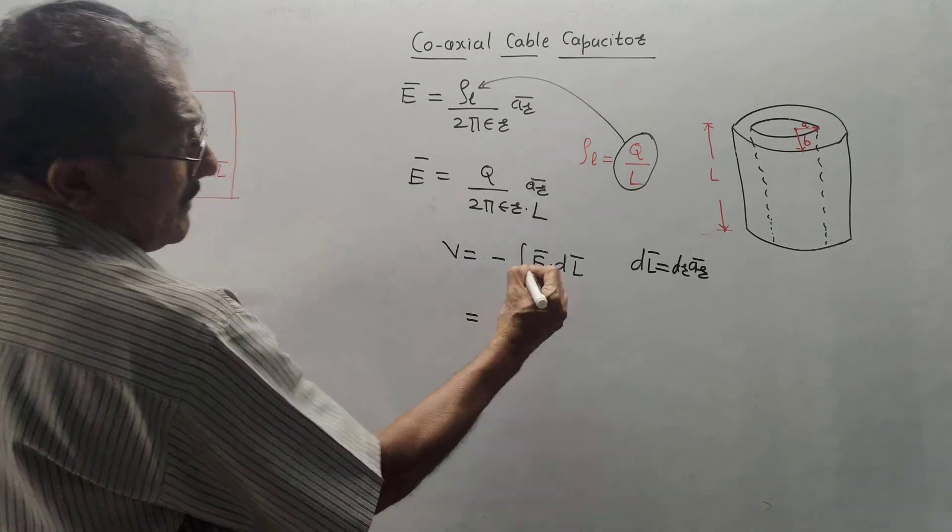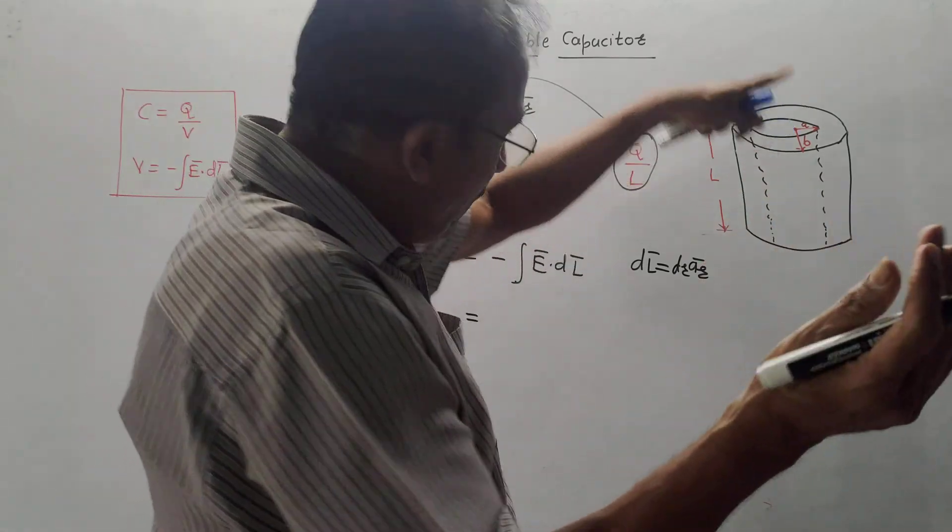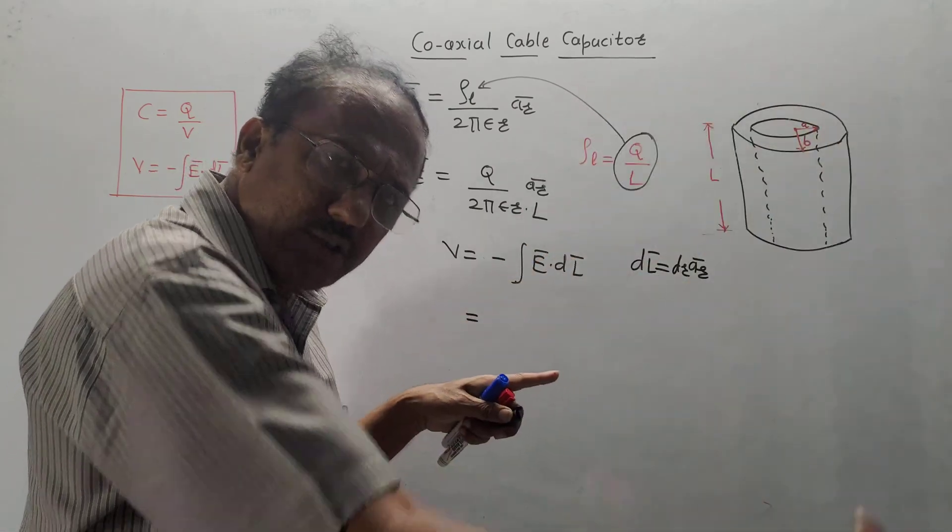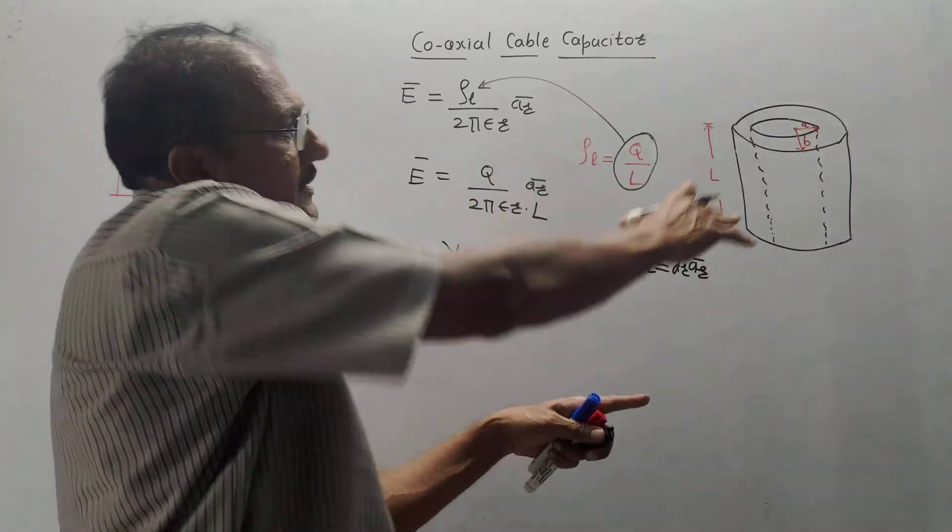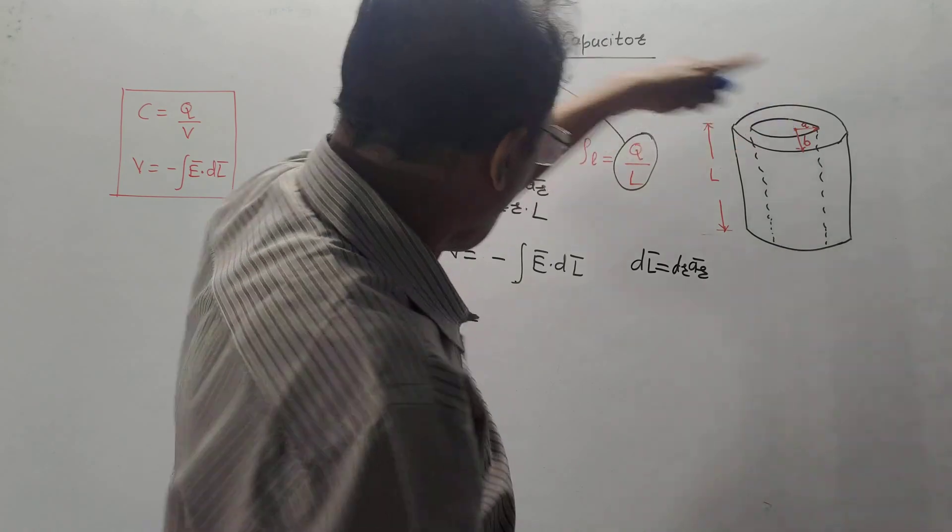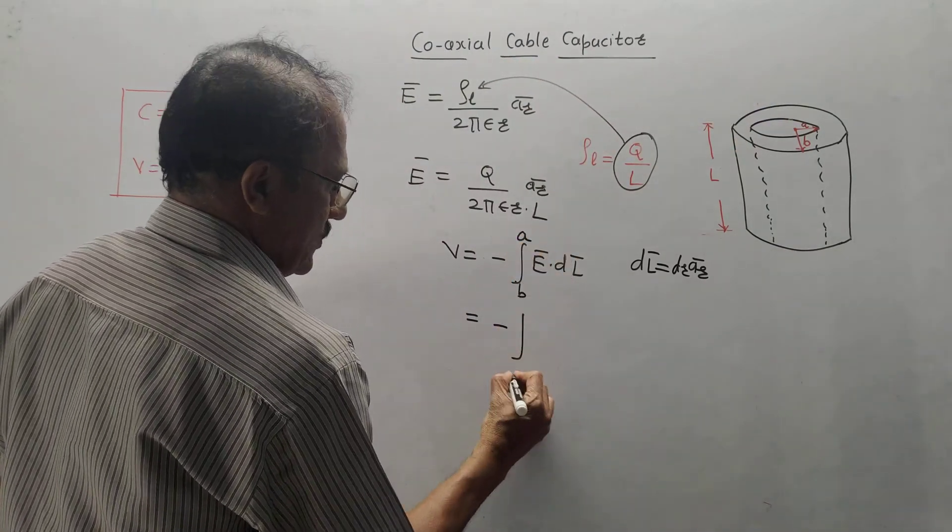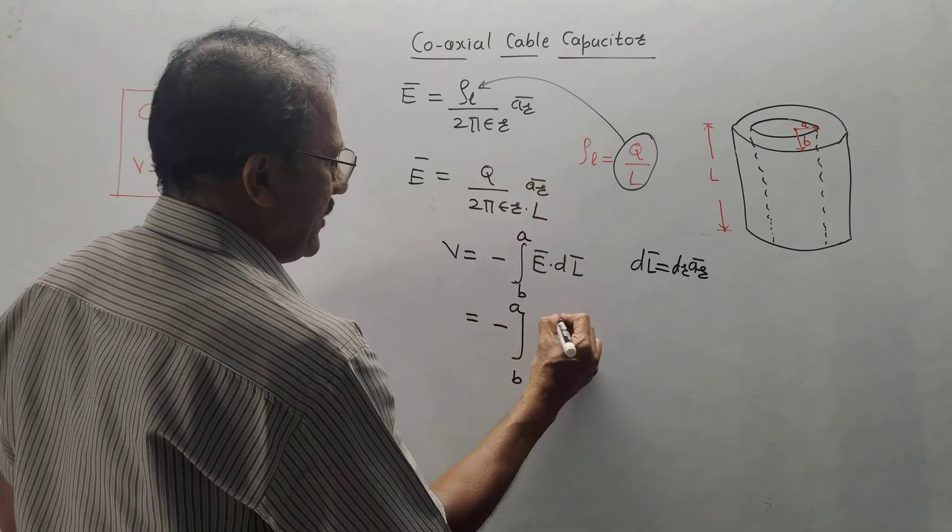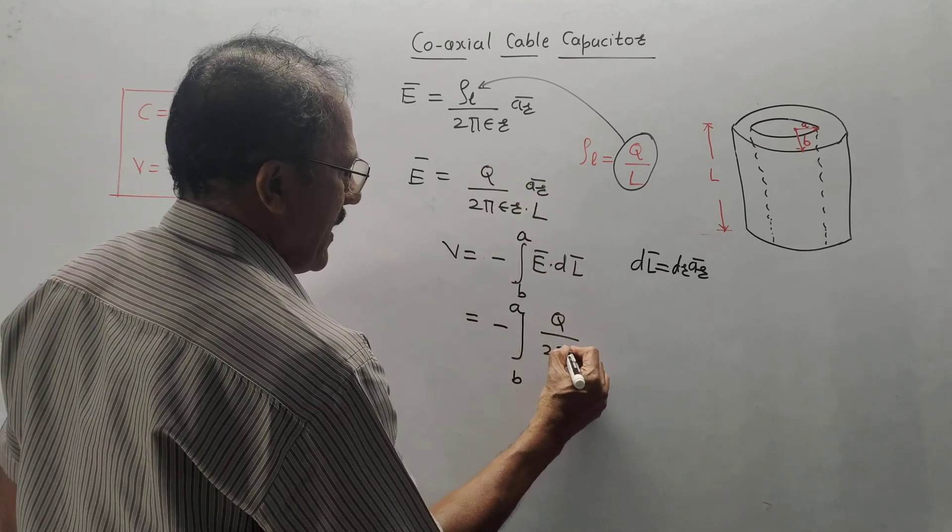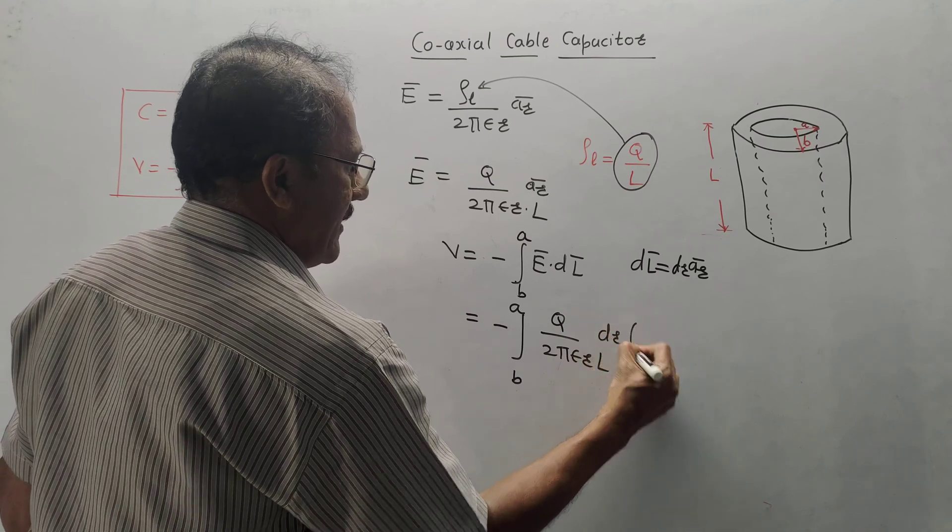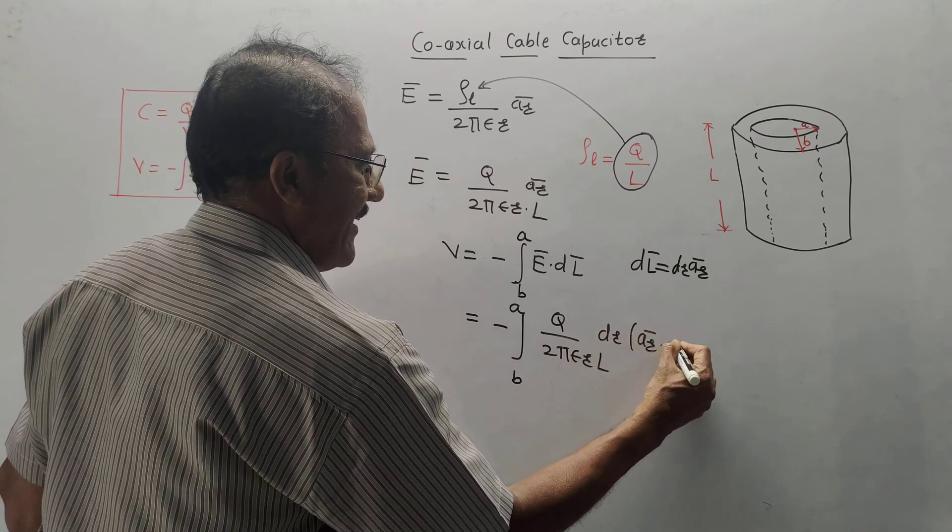Limits of integration will be, always in case of voltage, limits of integration will be from outer surface, outer structure to the inner structure. That means from B to A. So, it becomes minus integration B to A, Q by 2 pi epsilon R L D R AR bar dot AR bar.